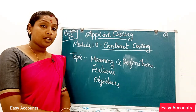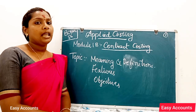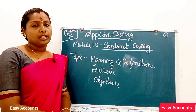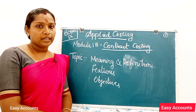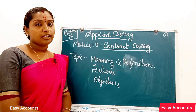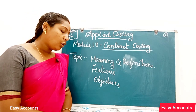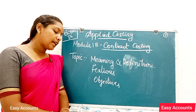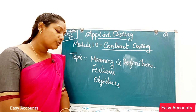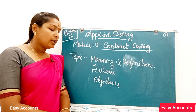The second objective is ascertainment of profit. The profit from each contract is to be calculated either on the completion of the contract or at the end of the accounting year.